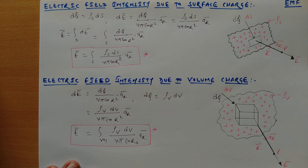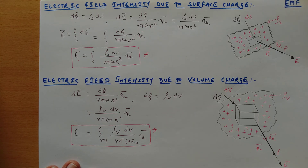So now we have seen the electric field intensity expressions due to point charge and line charge in the previous video, and surface charge and volume charge in this video. This topic is now complete, and in the coming videos I will take some numericals on this topic so that how we use these expressions in numericals will be clear to you. Thank you.